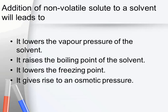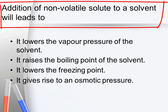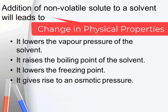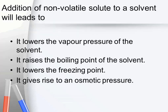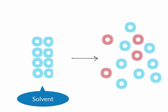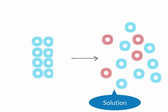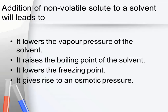We know that the addition of an ideal non-volatile solute to a solvent won't change the chemical properties of the solvent. Rather it will affect some of the physical properties of the solvent. It changes the orderness of the solvent system — we can say that the disorderness of the system increases, or the entropy is going to change.